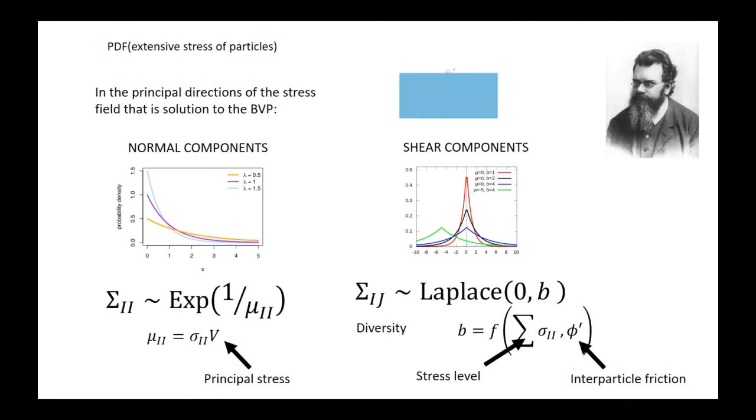This theory is based on classical statistical mechanics, and it anticipates that the probability distribution function of the extensive stress of the particles in the principal direction of the stress field at its solution to the boundary value problem follow an exponential distribution in the case of normal components, and a Laplace distribution in the case of shear components. The theory also anticipates that these PDFs are located and scaled by the solution to the corresponding boundary value problem.